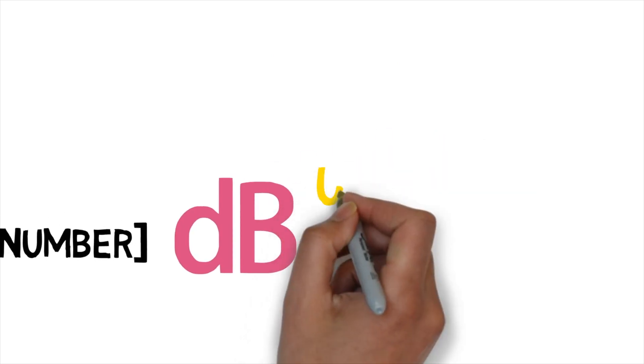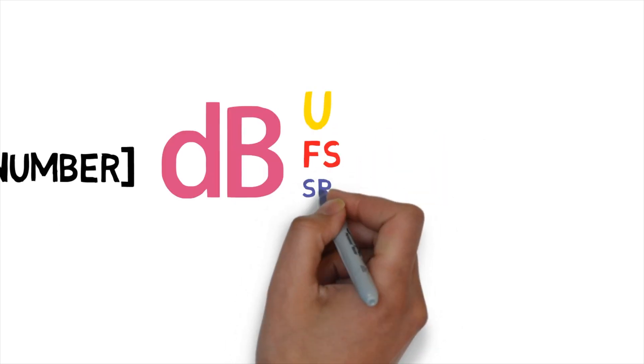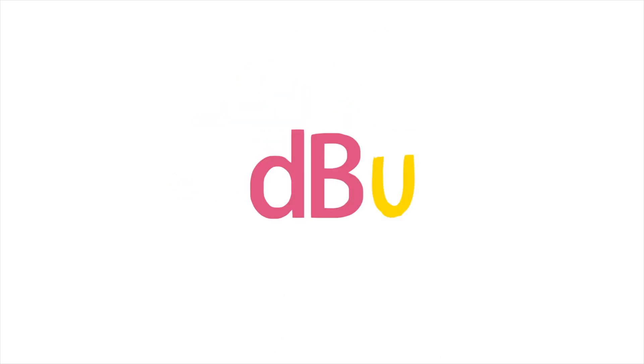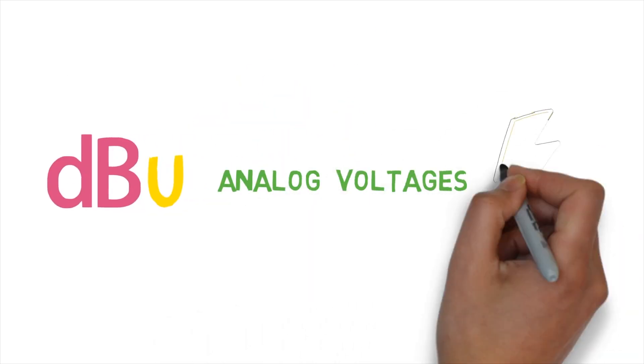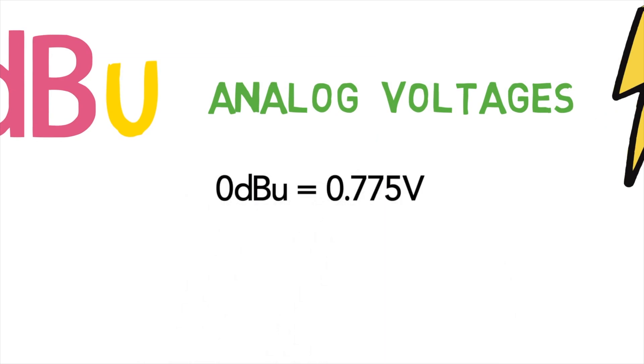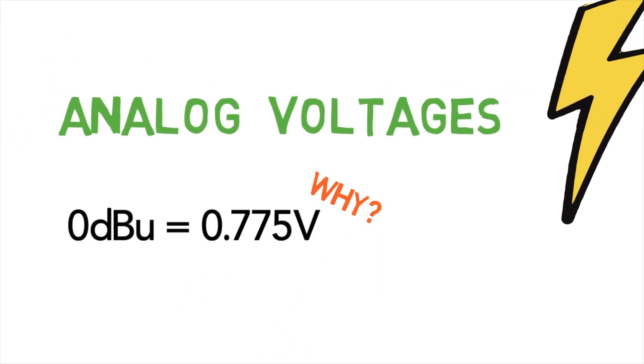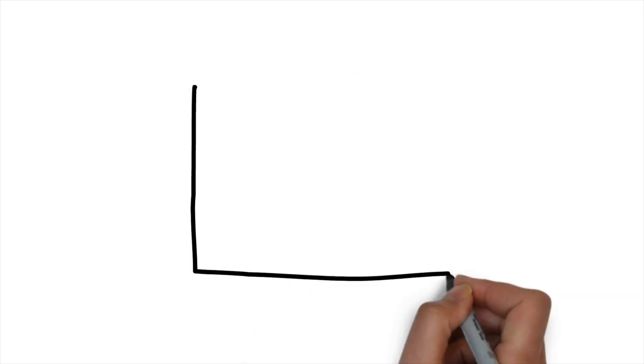For example, we've got DBU, DBFS and DBSPL. Let's look at DBU first. DBU is actual analog voltages, like in a mixing desk, and it's referenced to 0.775 volts. Why, you may ask? Well, it's kind of arbitrary.